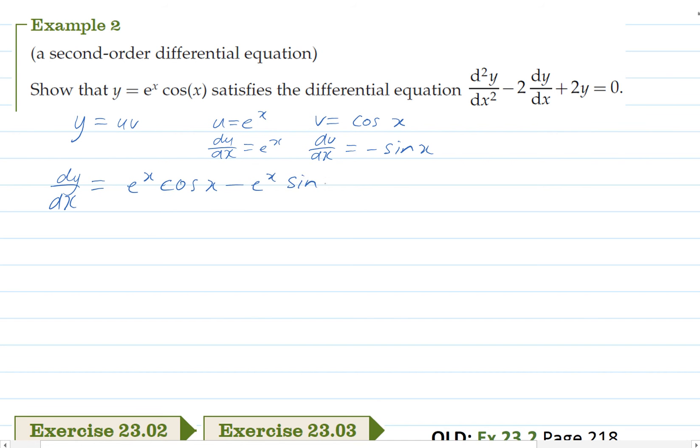And so dy/dx is going to be e to the x cos x minus e to the x sin x. And so our second derivative d squared y by dx squared, well we already know what that differentiates to. It differentiates to that whole function.